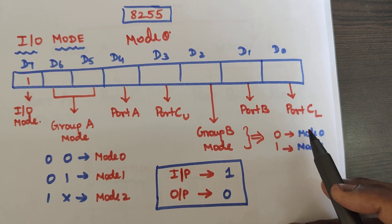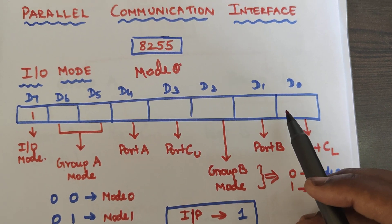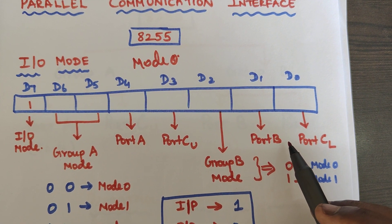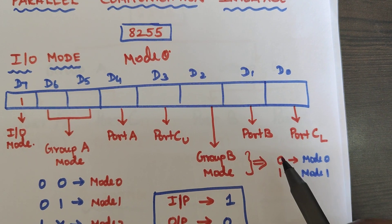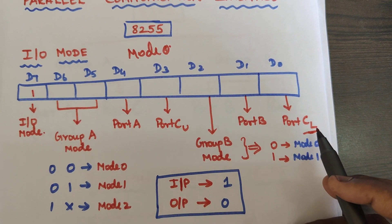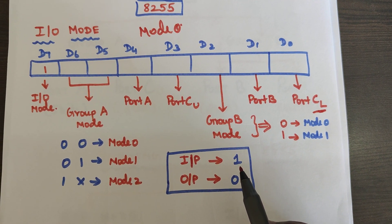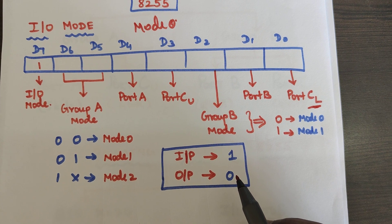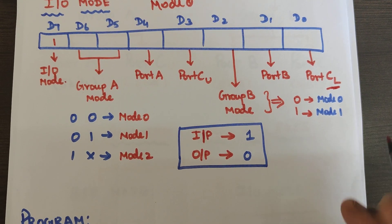D1 represents whether port B will act as input or output, and D0 represents whether port C lower will act as input or output. Whenever a port acts as input, give it a value of 1; if it acts as output, give it a value of 0.